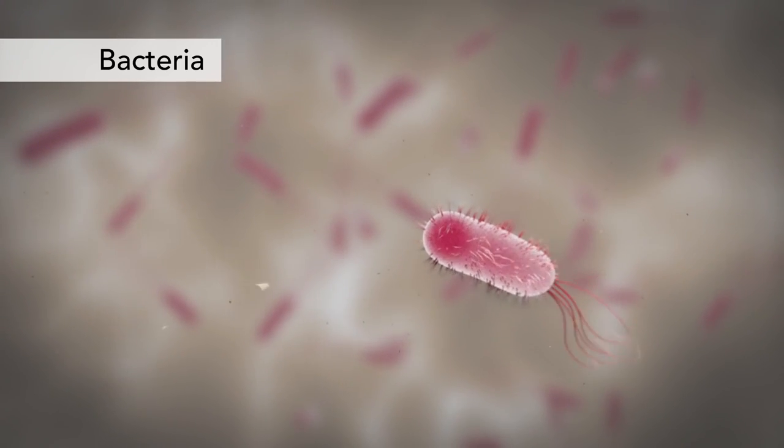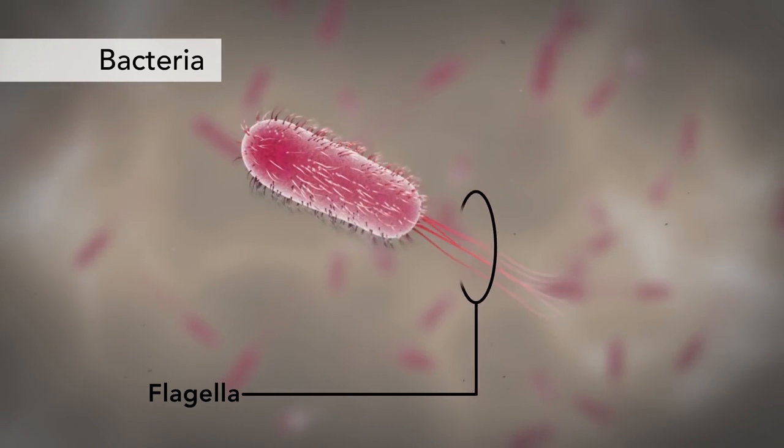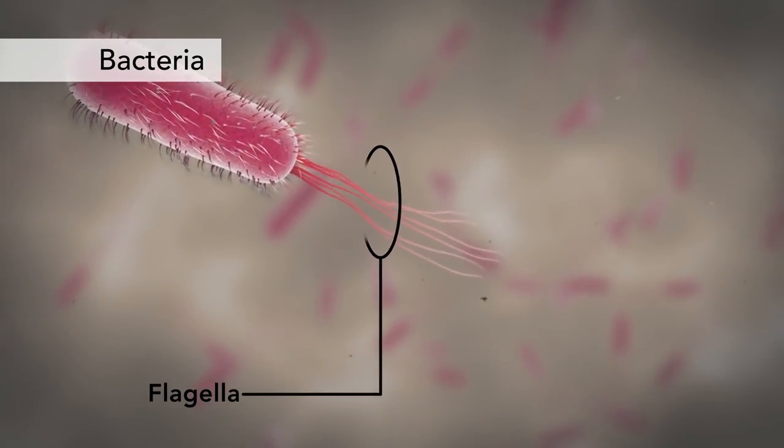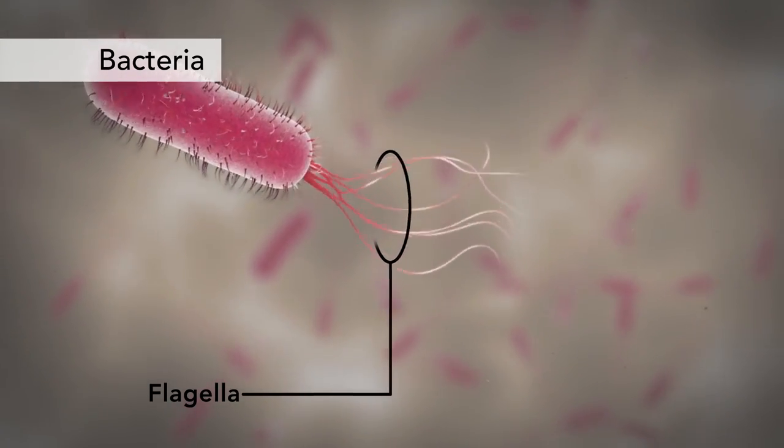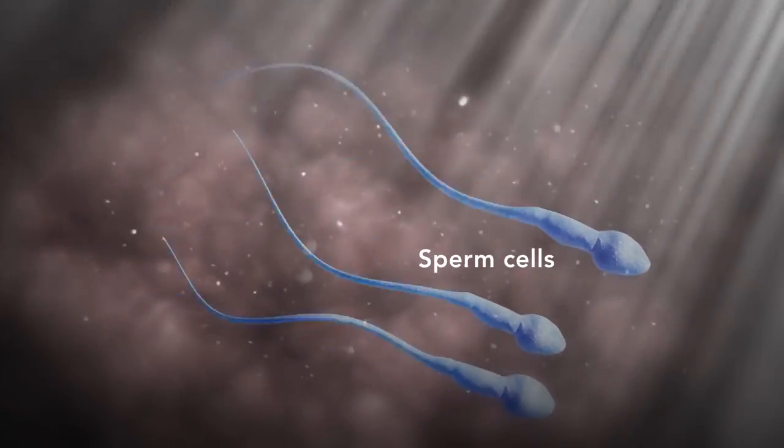Another unique feature in some cells is flagella. Some bacteria have flagella. A flagellum is like a little tail that can help a cell move or propel itself. The only human cell that has a flagellum is a sperm cell.